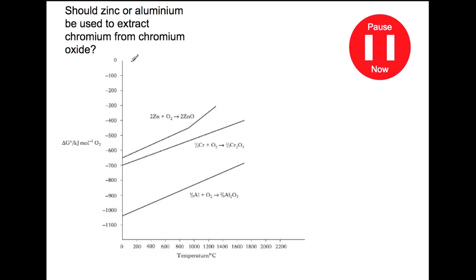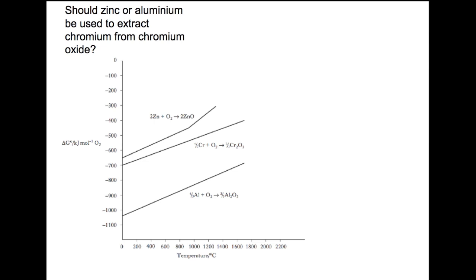Pause the video now. For this final question, we're looking at zinc and aluminium being used to extract chromium from chromium oxide. The chromium line is in the middle and we have the zinc line above and the aluminium line below. As the aluminium line is always below the chromium line, aluminium should be used to extract chromium from chromium oxide.